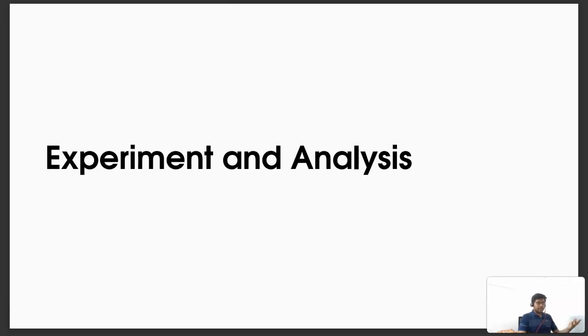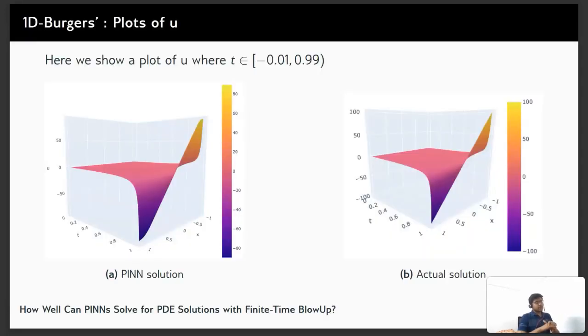Now what did we get from the experiment and analysis of it? Here we show the plots of the PINN solution and the actual solution for the Burgers' PDE. Here we take t in the range [-0.01, 0.99].